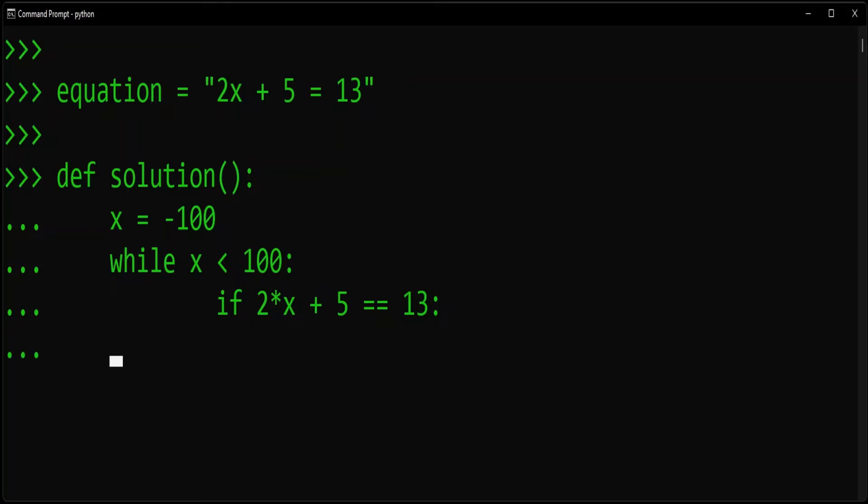then we'll have Python print x is equal to, and Python will then print whatever that x value is that makes this 2x plus 5 is equal to 13 correct. So at that point,